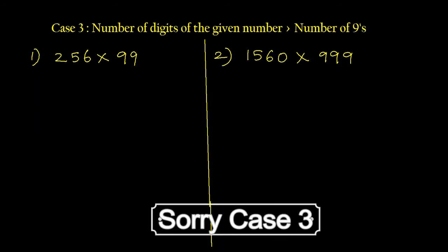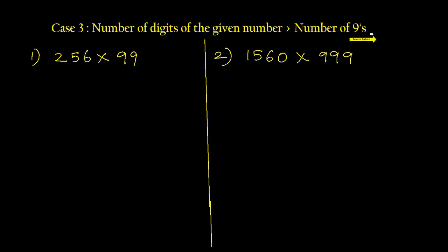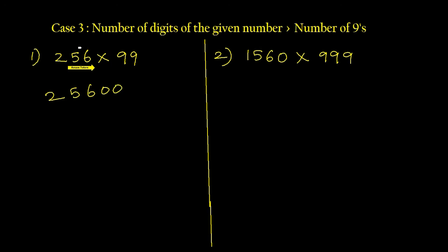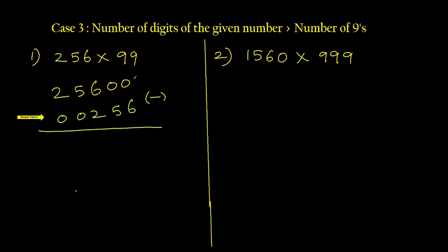Now case three: when the number of digits of the given number is greater than the number of nines. For this case we cannot follow the previous method. Instead, find the next multiple of 10 closest to 99, which is 100. Multiply 256 by 100 by adding two zeros: 25600. Now take away 256. Borrowing as needed: 10 minus 6 is 4, 9 minus 5 is 4, 5 minus 2 is 3, leaving 25344.